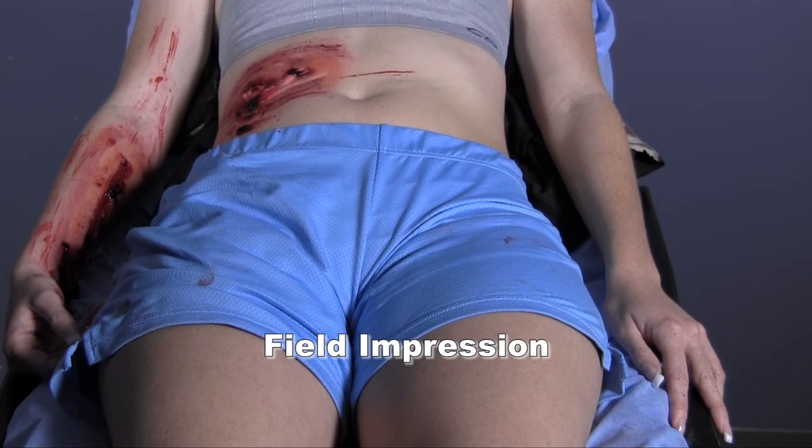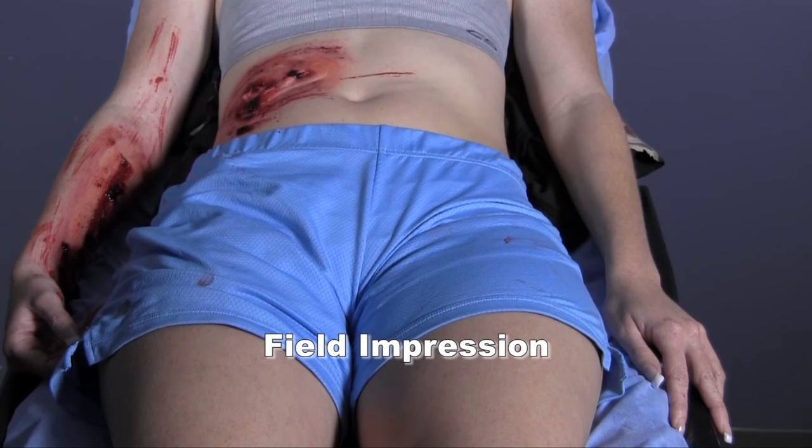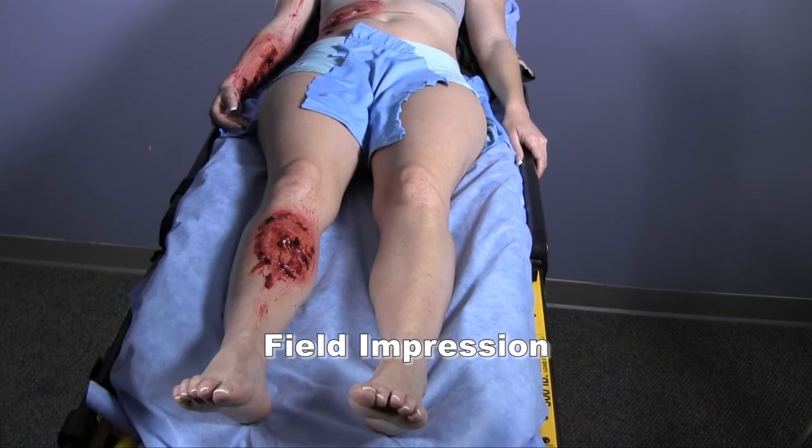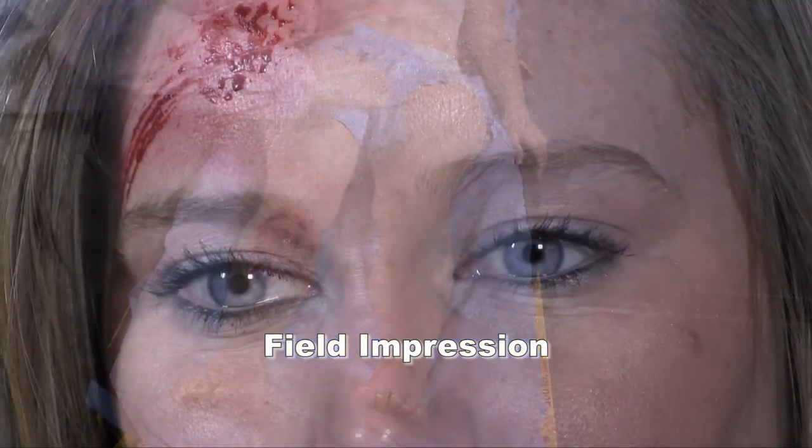Now that I have completed my primary and secondary assessment and have a set of baseline vital signs, I can determine what my field impression is. My field impression of this patient is that she is suffering from multi-systems trauma. We have found a laceration to her arm and abdomen, an open fracture of her right lower leg, and abrasion on her head.